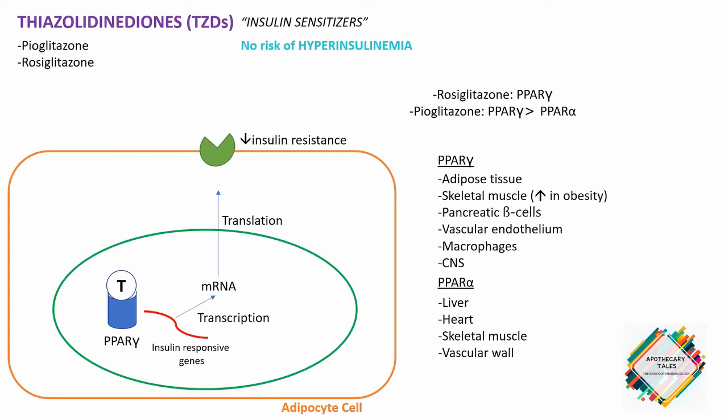The effect of these drugs on cholesterol levels is of interest. Rosiglitazone increases LDL cholesterol and triglycerides, whereas pioglitazone decreases triglycerides. Both drugs increase HDL cholesterol, which is the good cholesterol.